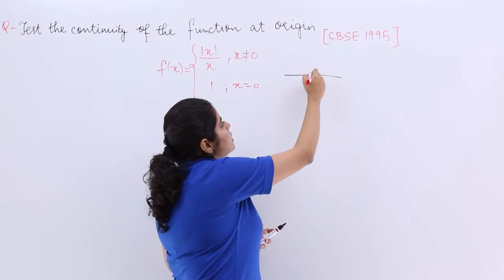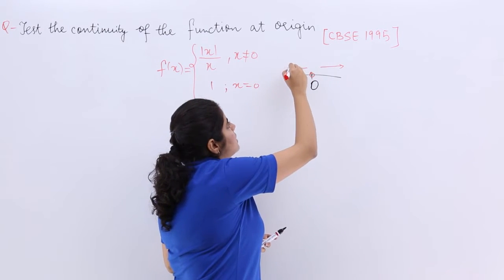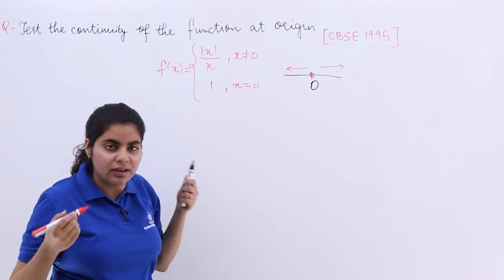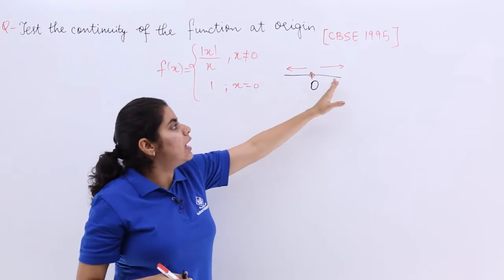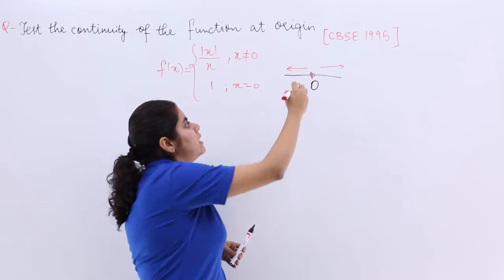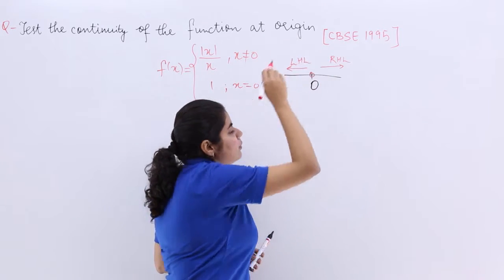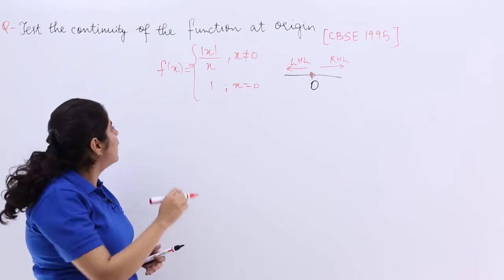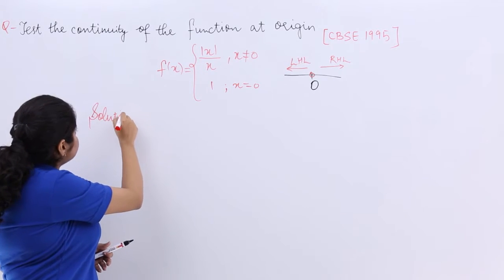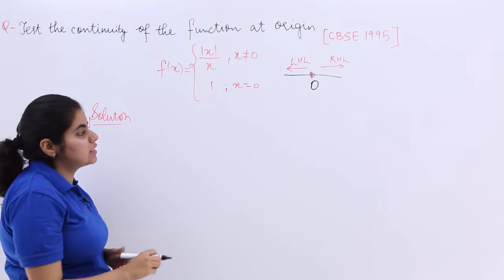Equal to 0 is here. Not equal to can be either on the right hand side or on the left hand side. So not equal to will have 2 cases. One is the left hand limit. Second is the right hand limit. So we are going to start. Let's write the heading as solution.